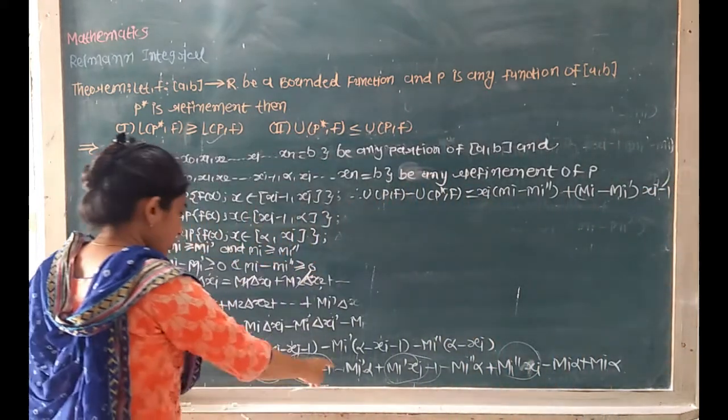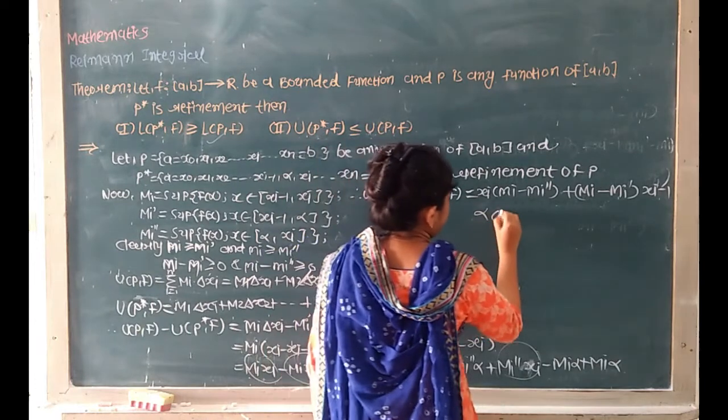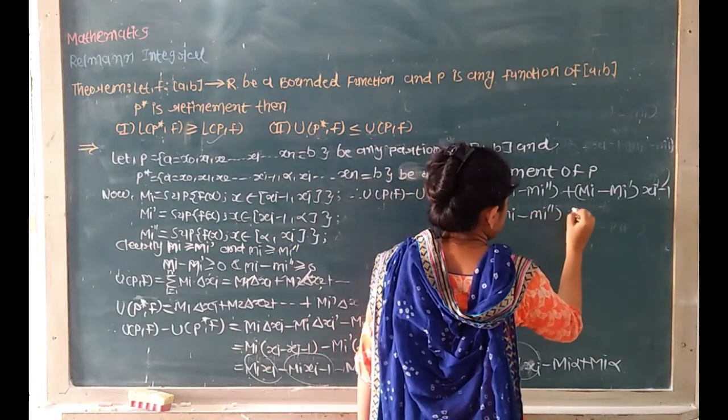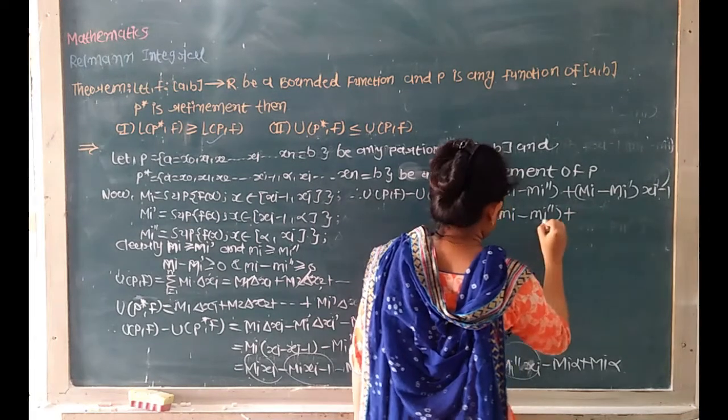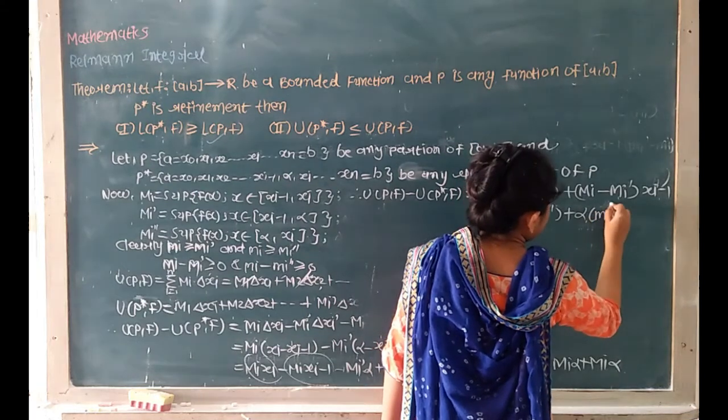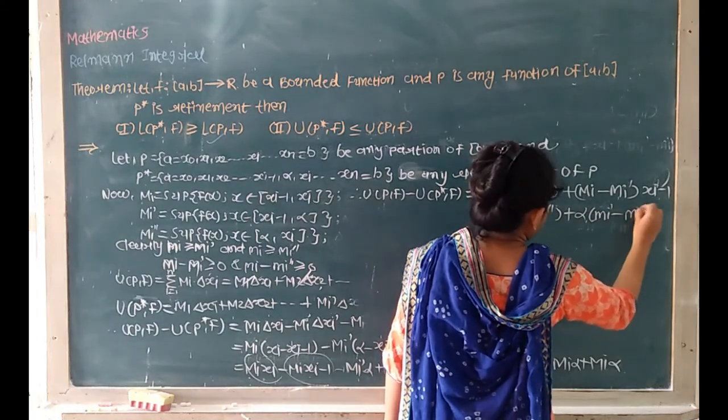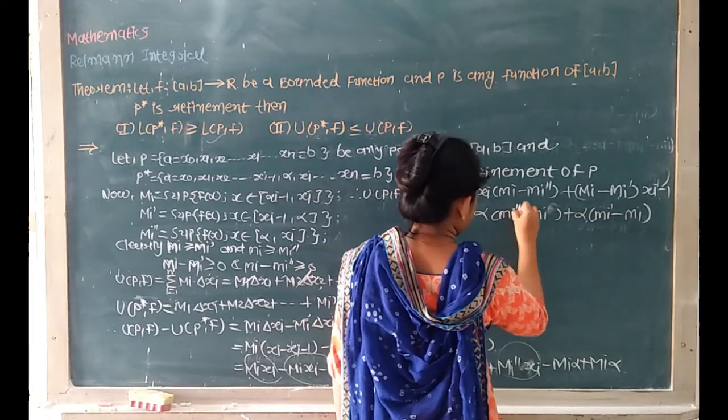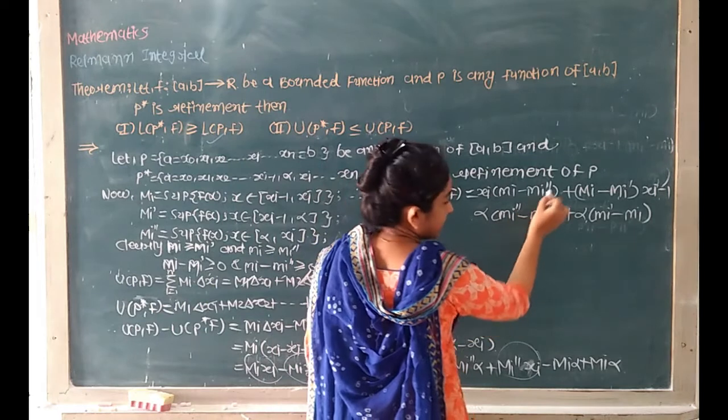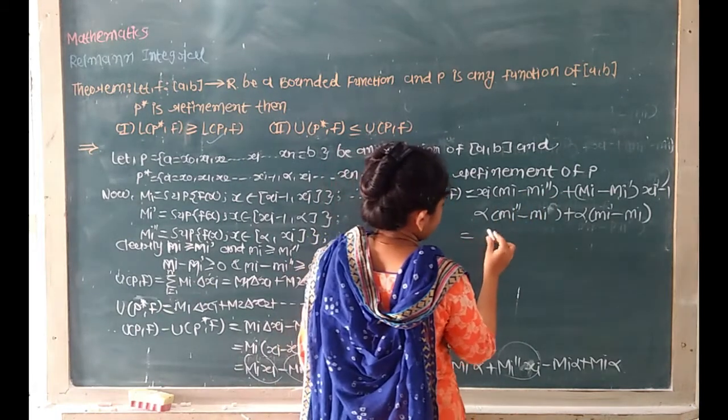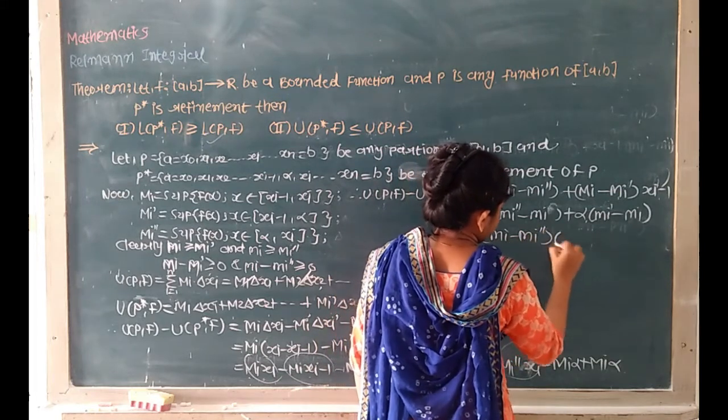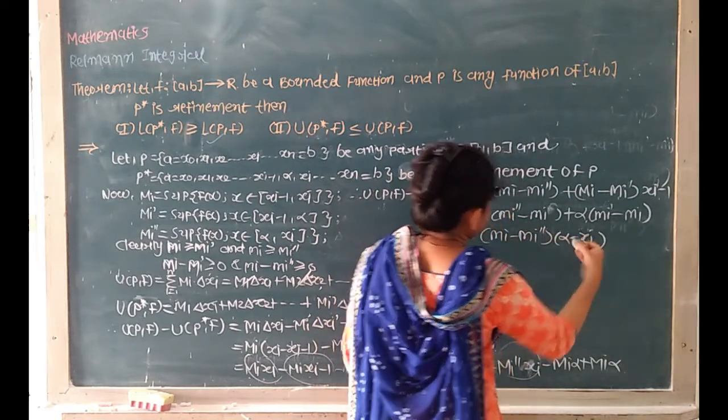And I have to write to the other part, the alpha common factor. Alpha times (Mi minus Mi dash) and plus alpha times Mi dash minus Mi double dash. And alpha minus xi minus 1, you can raise this.